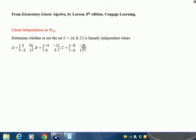This time we're working in M22, the set of 2 by 2 matrices, that's our vector space. I'm trying to figure out whether or not this set S, which consists of these vectors A, B, and C that are in M22, whether that set is linearly independent.